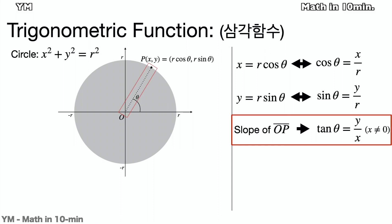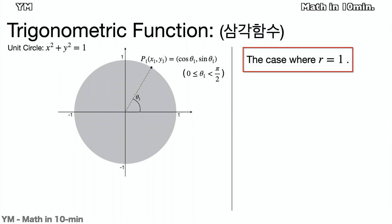The slope of the line OP is tangent theta. Since the slope is originally Y over X, it can also be written as R sine theta over R cosine theta, and as you know, sine theta over cosine theta equals tangent theta. When the radius is 1, P is simply equal to (cosine theta, sine theta).